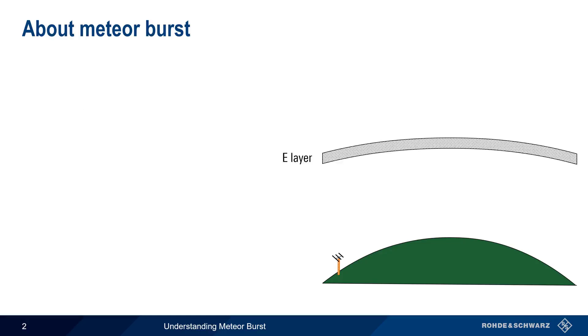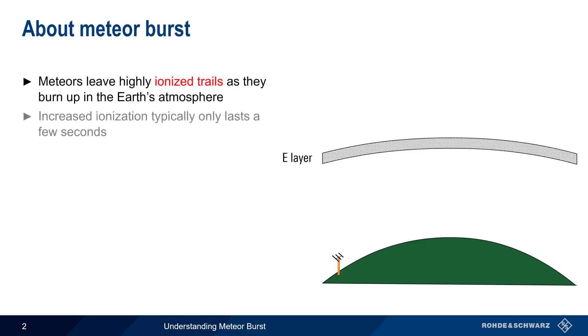Meteor burst refers to a form of ionospheric propagation at VHF. Meteors leave highly ionized trails as they burn up in the Earth's atmosphere, with this increasing ionization typically lasting only a few seconds. Meteor heating begins at an altitude of about 120 kilometers, and most meteors are completely burned up before they reach an altitude of 80 kilometers.